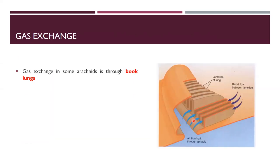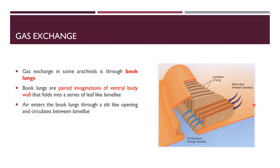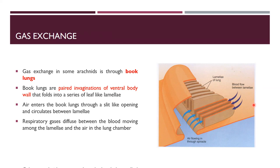For gas exchange, arachnids have book lungs — paired invaginations of the body wall with lamella-like structures. Air enters through slit-like openings and gaseous exchange occurs between the blood and lamellae. Some arachnids also have trachea for gas exchange. Book lungs and trachea are both respiratory structures in arachnids.